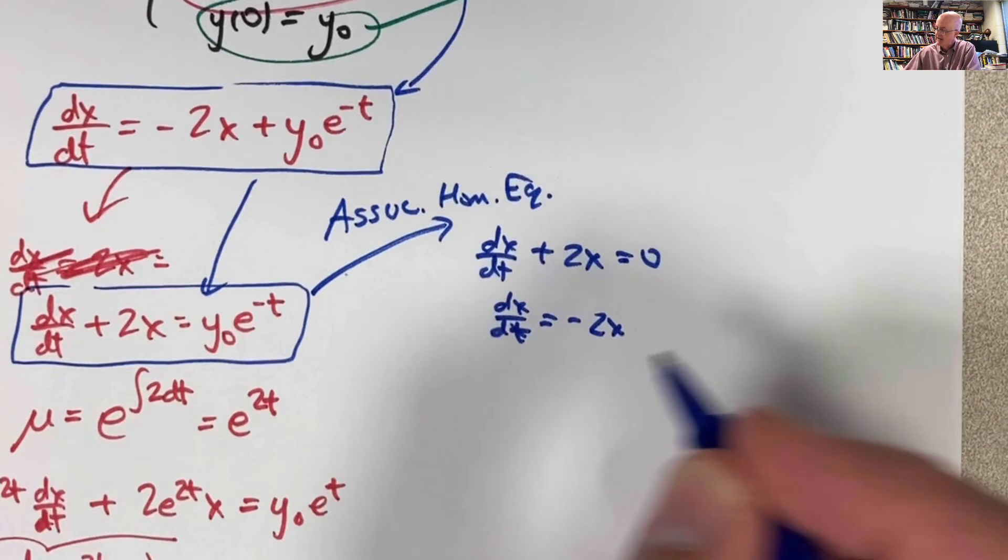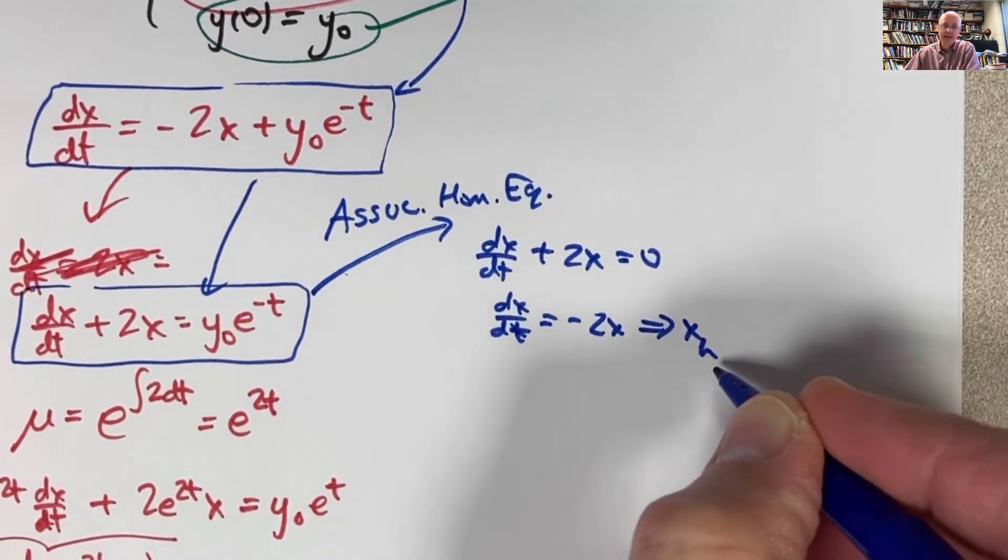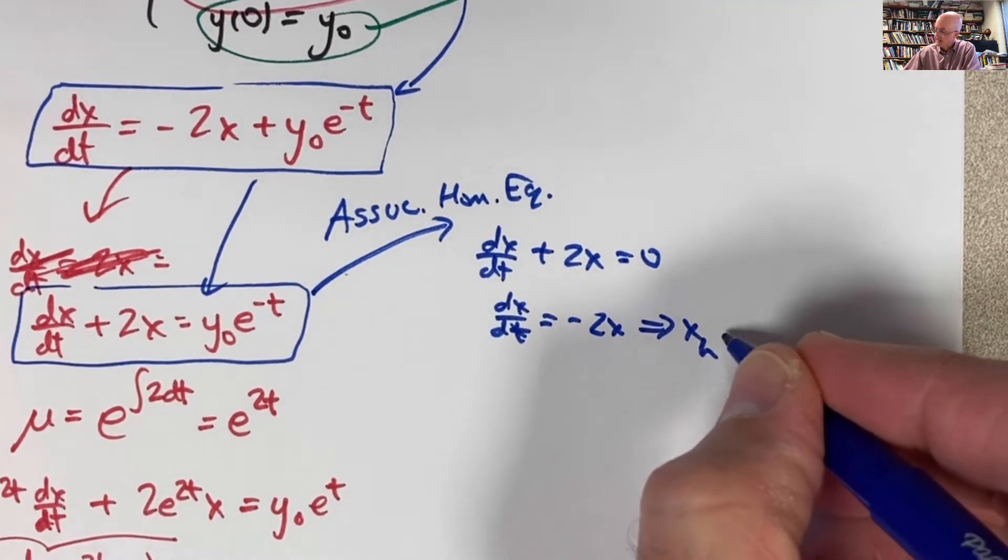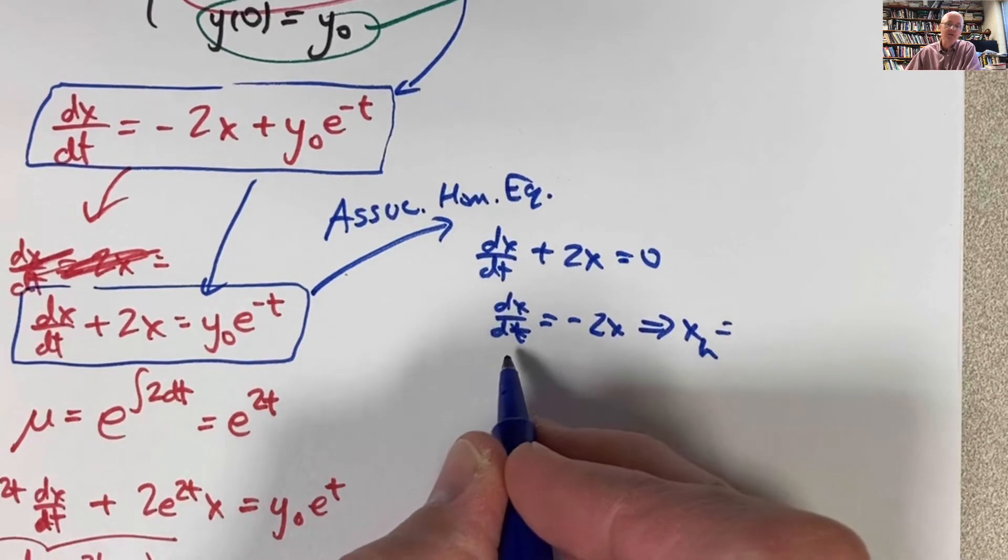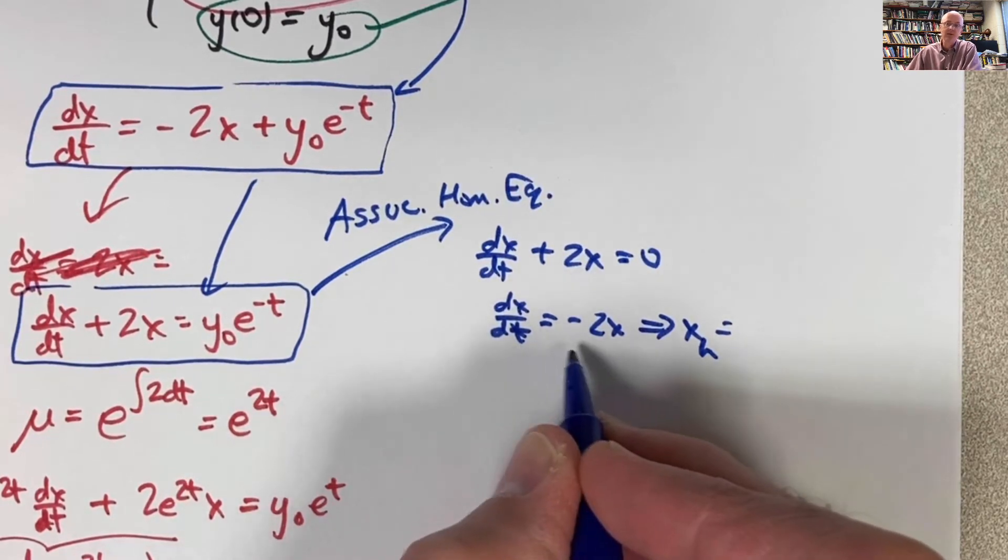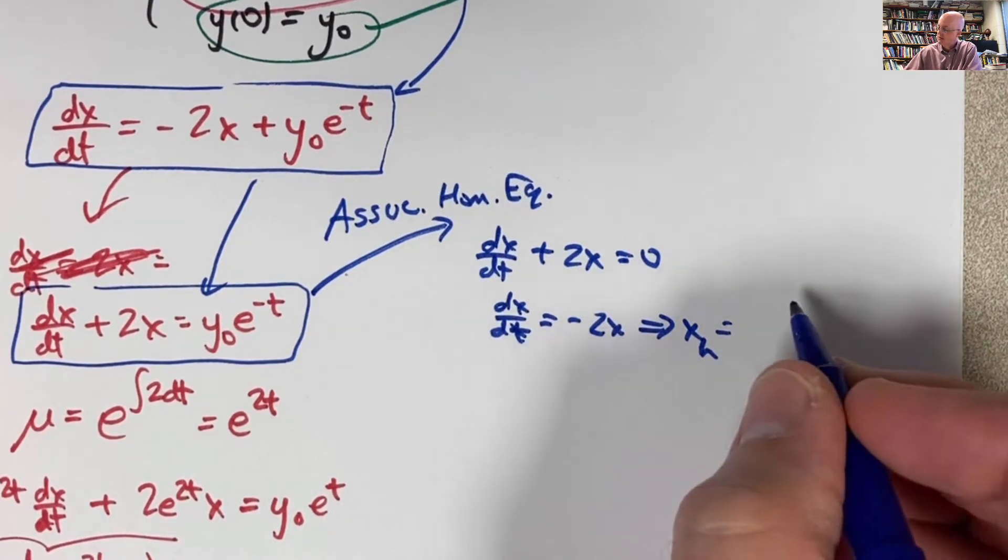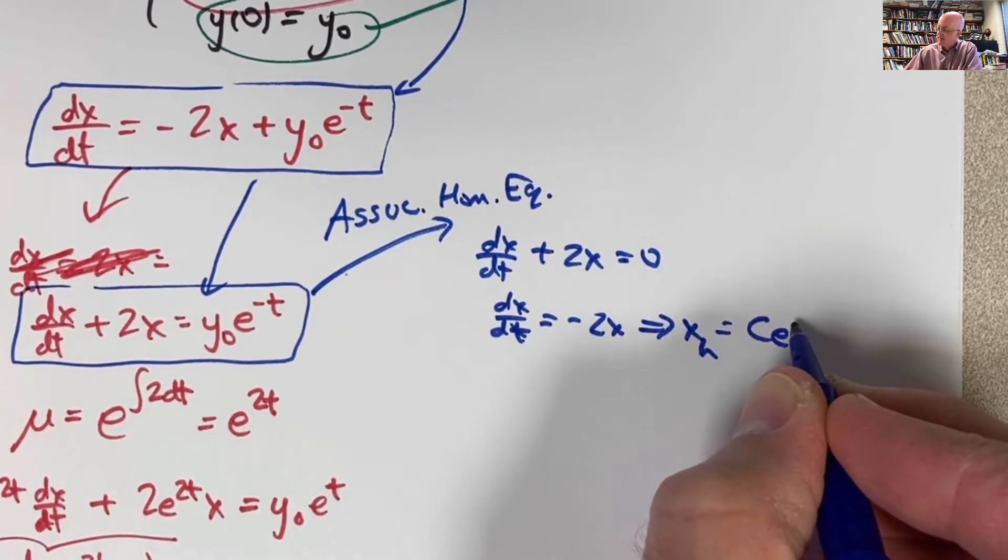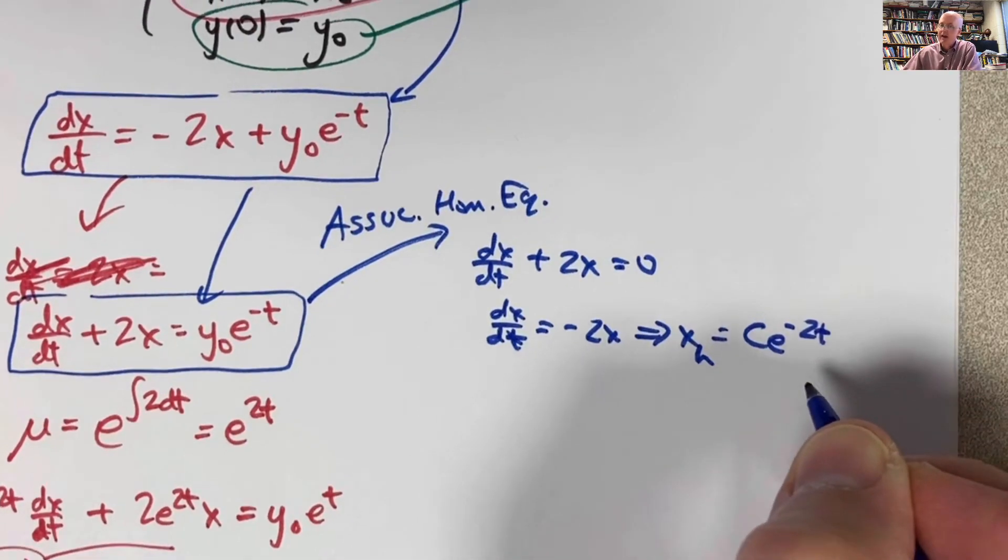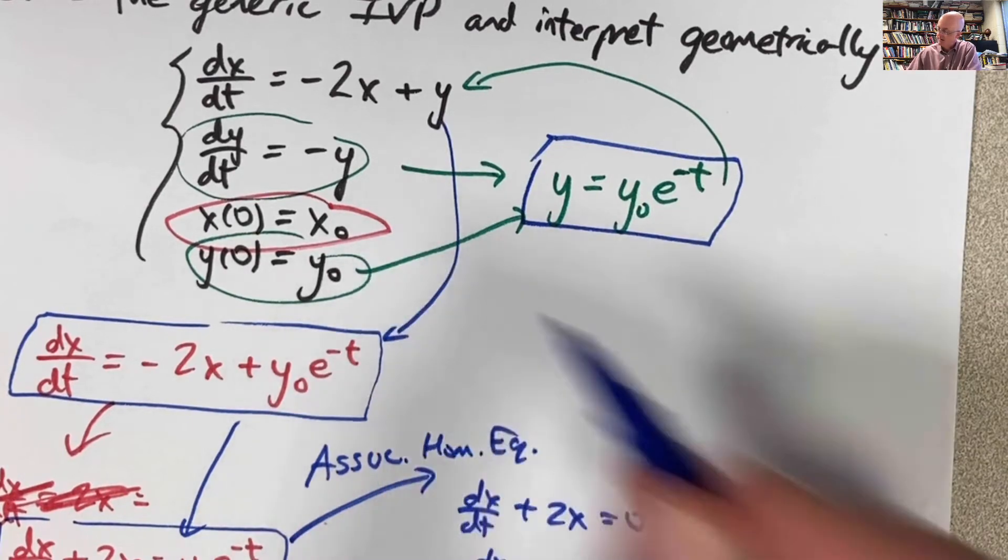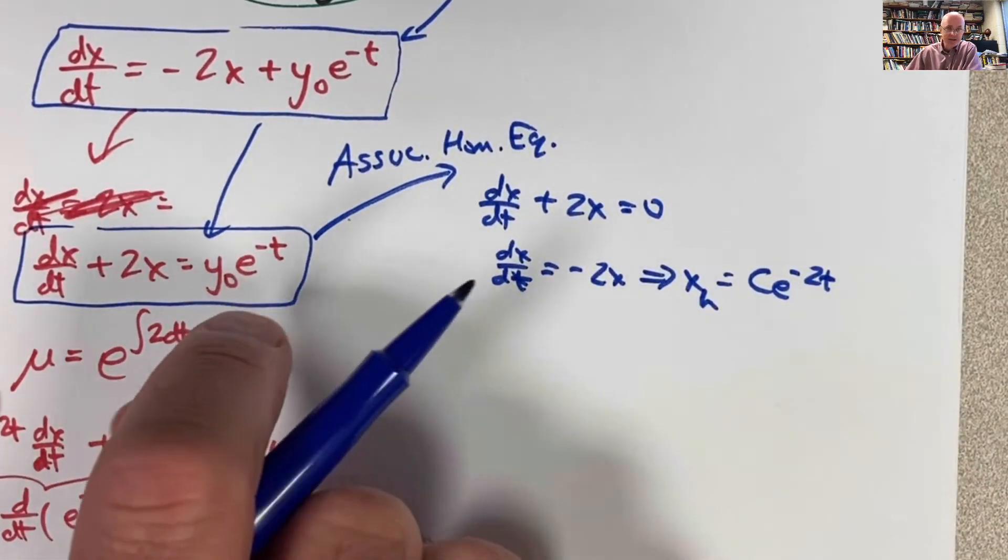And in fact, we can guess the solution to this. x sub h, I'm going to call it x sub h because the h is going to stand for homogeneous, is a constant times e to the negative 2t. I'm after a function whose derivative is negative 2 times itself. e to the negative 2t works. Any constant times e to the negative 2t works. I'm going to call the constant c this time. And c is going to be an arbitrary constant as opposed to y0, which was a specific constant, because that's going to ultimately help me find the general solution to this thing right here.